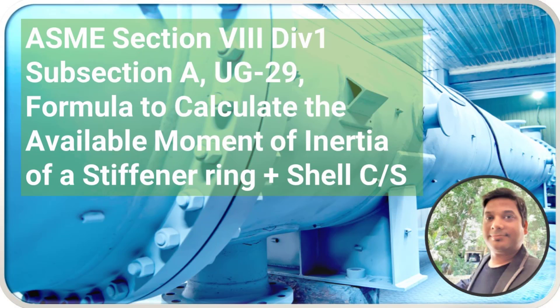Hello everyone. In this lecture, we are going to see ASME Section 8, Division 1, Subsection A, UG 29 Formula to Calculate the Available Moment of Inertia of a Stiffener Ring and Shell Cross Section.